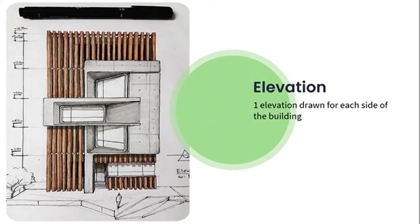So as we know, if we're cutting through a space, a section would then come into play. The correct way to draw up an internal wall in relation to the rest of the space is with our section drawings. Simply put: a section cuts, and an elevation does not.